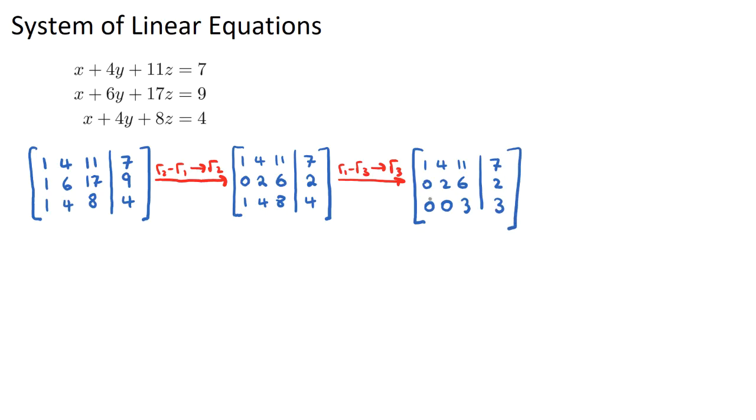Okay, now we have a triangle of zeros here, which is what we wanted, and we know this is now our final step, so we can actually start solving for our unknowns. Because this bottom line tells us that 0x plus 0y plus 3z should equal 3. So 3z will equal 3, and therefore, z is equal to 1. We can solve for z.